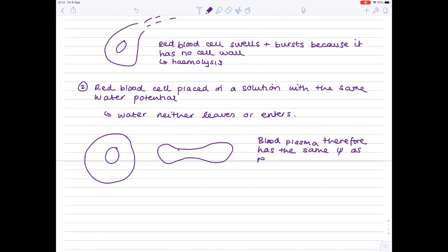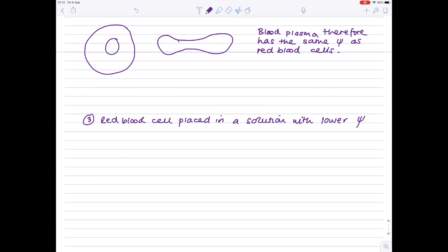What about the third scenario? When we place a red blood cell in a solution with a lower water potential, water leaves the red blood cell by osmosis. The cell shrinks and shrivels, and you end up with this kind of blobby shrunken shape, the hemoglobin being more concentrated.